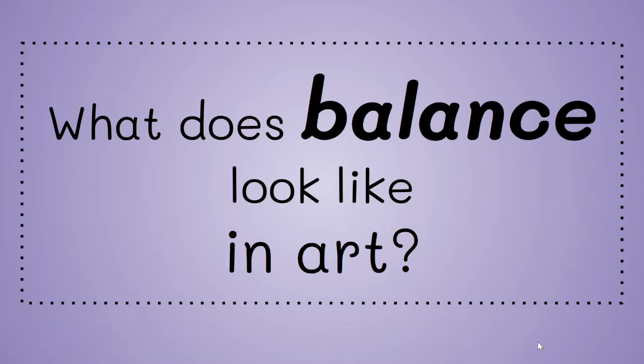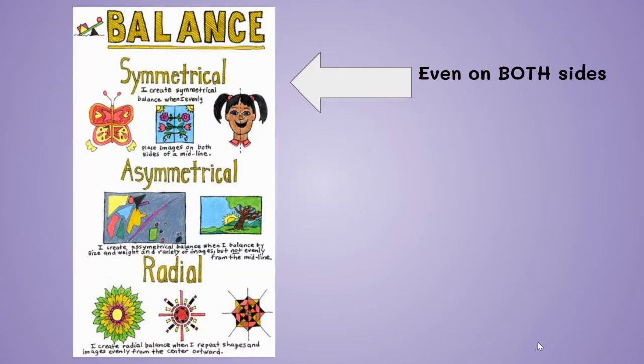Now let's talk about what balance looks like in art. There are three types of balance in art. The first is symmetrical balance, where you evenly place images on both sides of a midline.